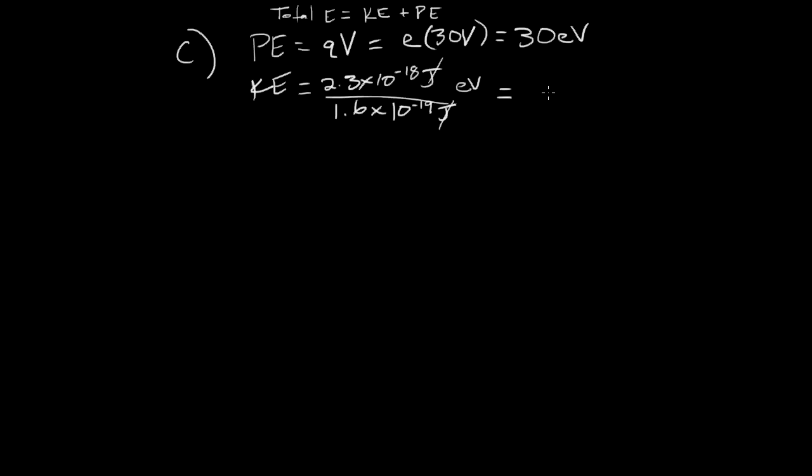Alright, 2.3 divided by 1.6. This is about 3 times 8. And this is about 2 times 8. So that's 3 over 2. Times 10. This is minus 18. But I need to add 19. So that takes me to 1. So that equals 1.5 times 10 to the 1 electron volts. Which equals 15 electron volts.